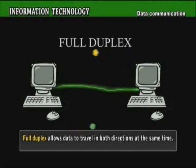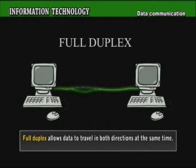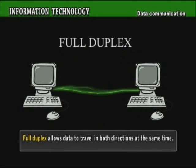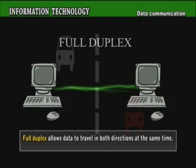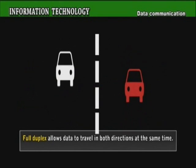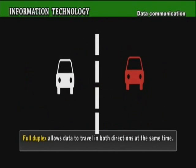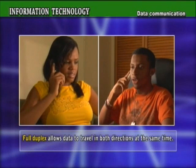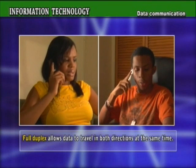Full Duplex allows data to travel in both directions at the same time. It is like a two-lane bridge or a two-lane roadway. This occurs with telephones or cell phones.